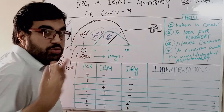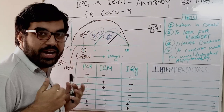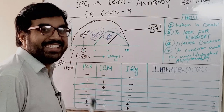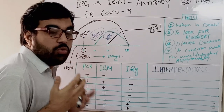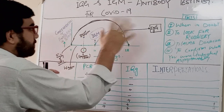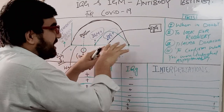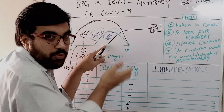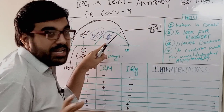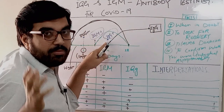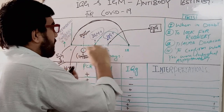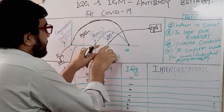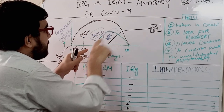We do not know how long IgG provides immunity, or whether the person is protected from reinfection. However, based on other infections, we presume it provides immunity — and that is the key role in plasma donation, which has shown positive results.